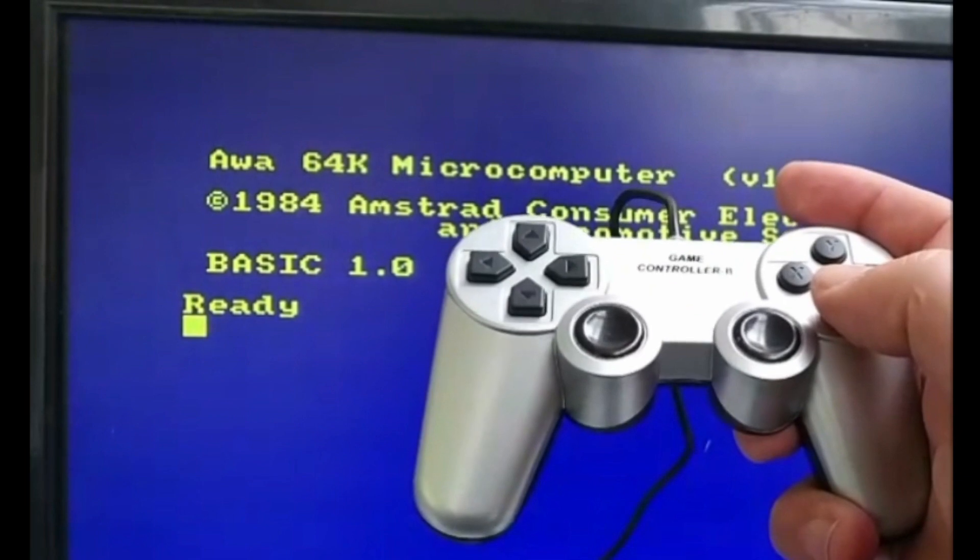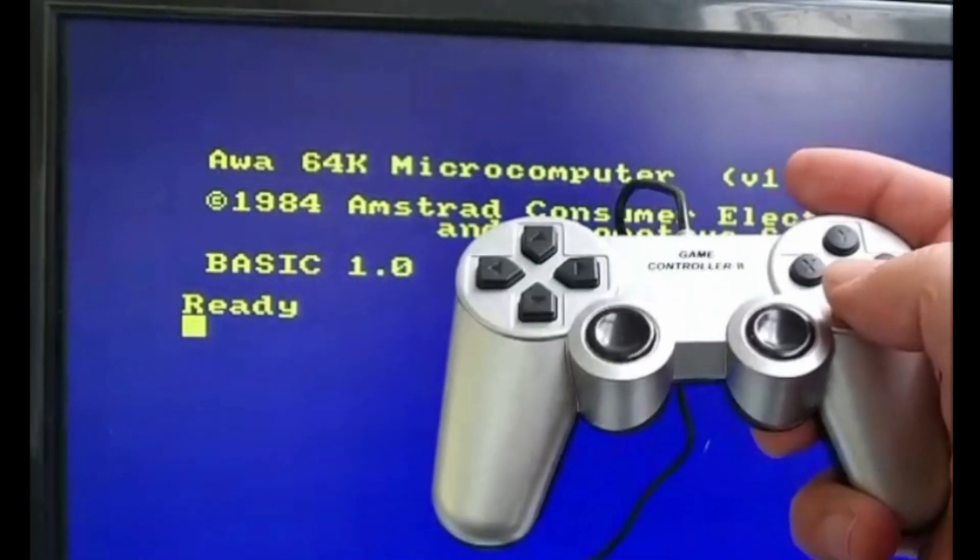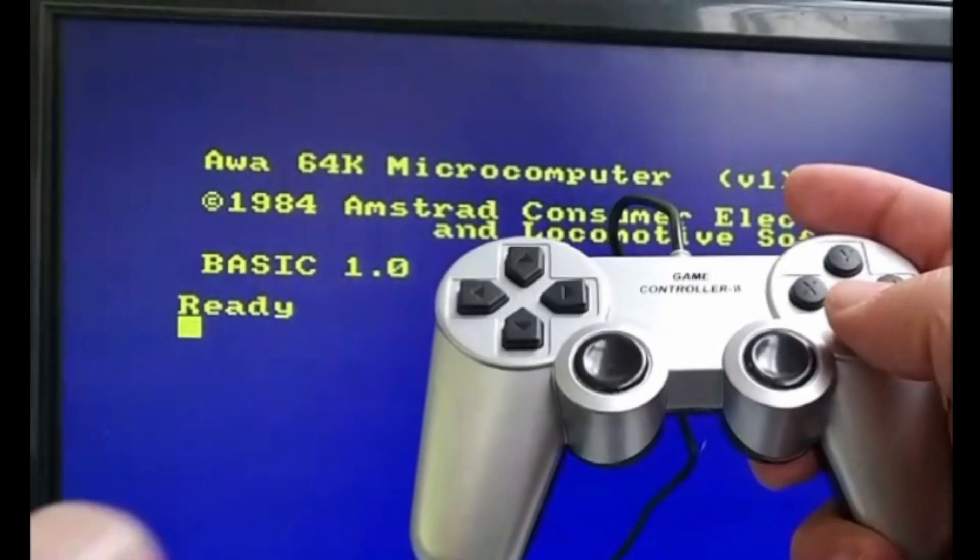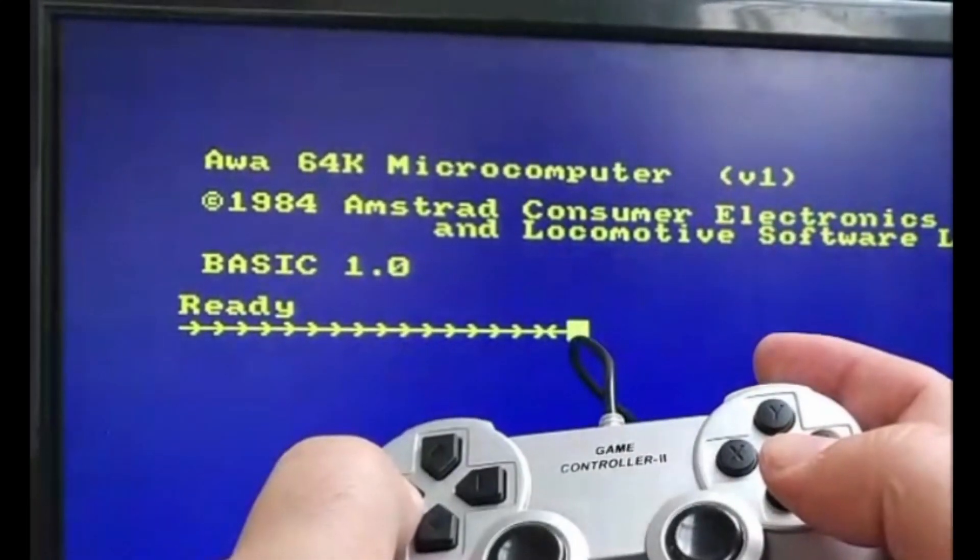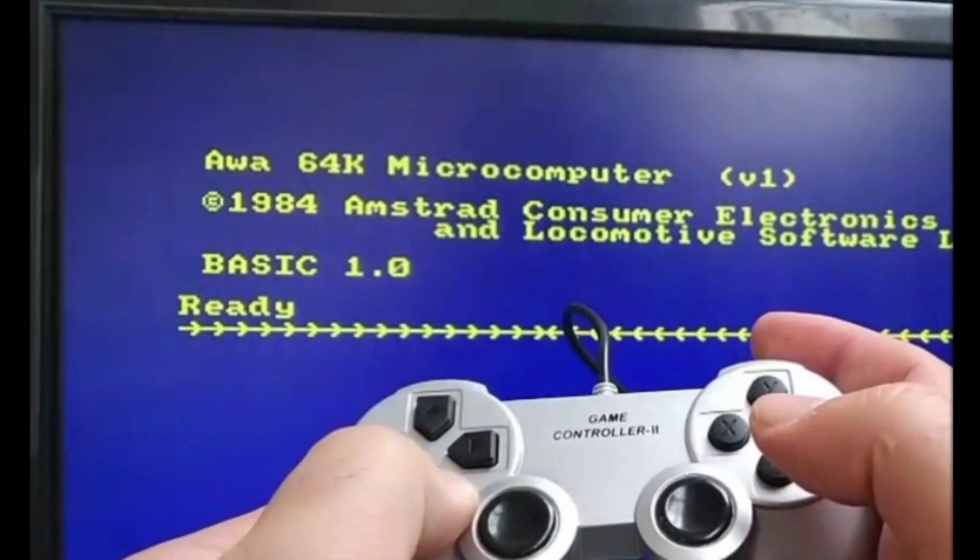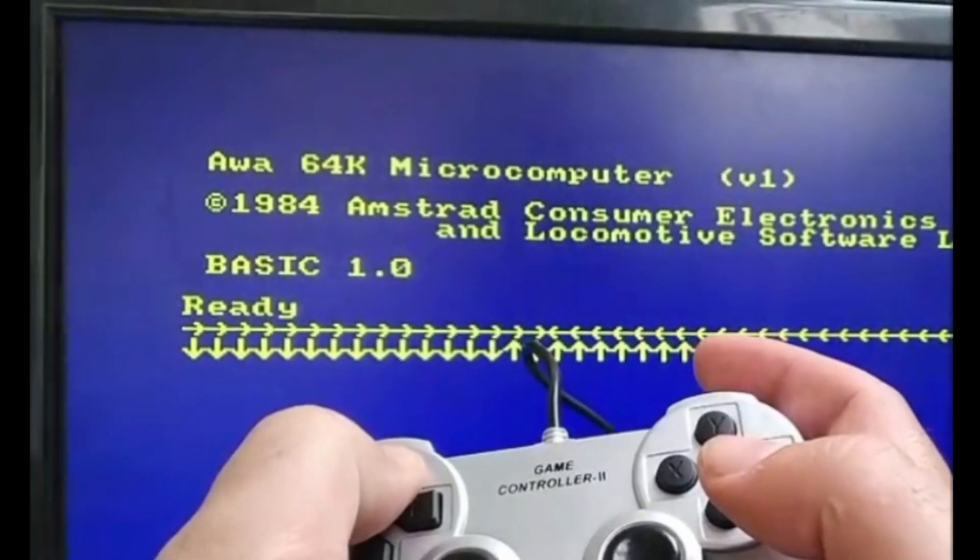In the last video I went through how to build this joystick for the Amstrad CPC464. One thing that you'll notice quickly is that the directional buttons have an autorepeat feature built in. So if I hold the button down - left, right, down and up - it autorepeats.